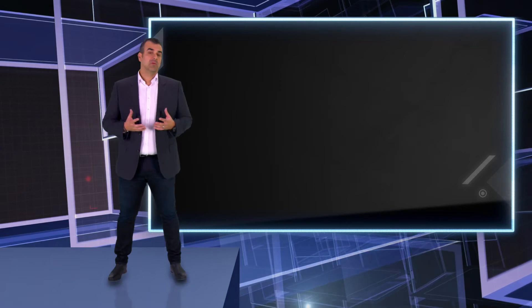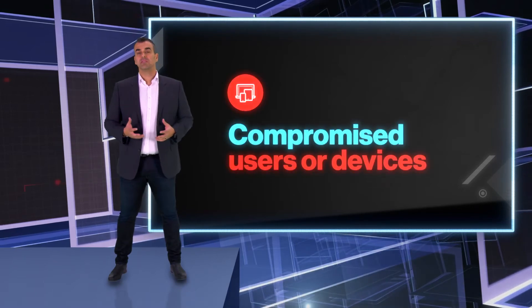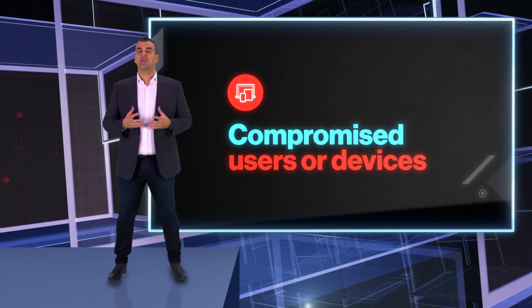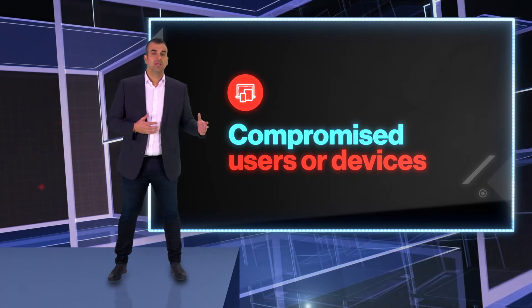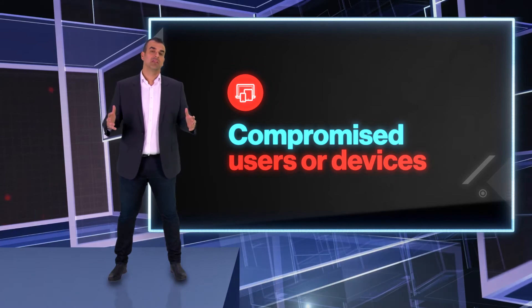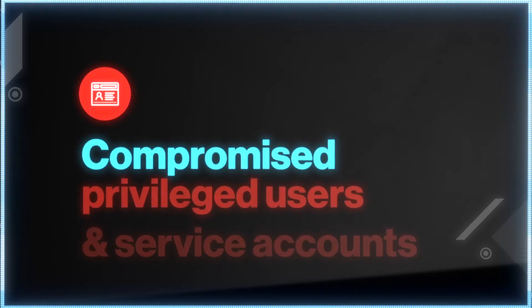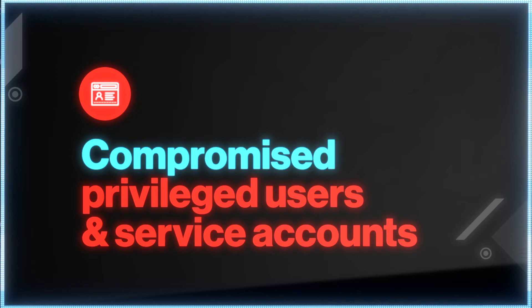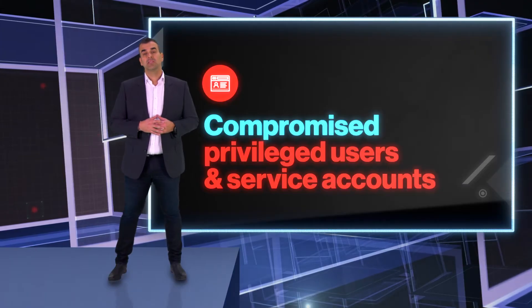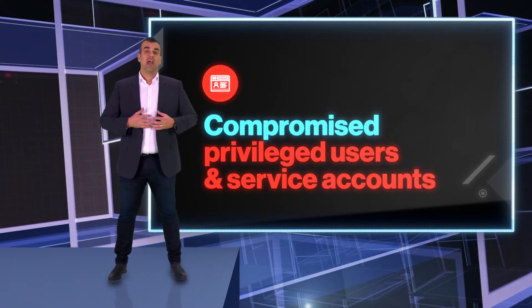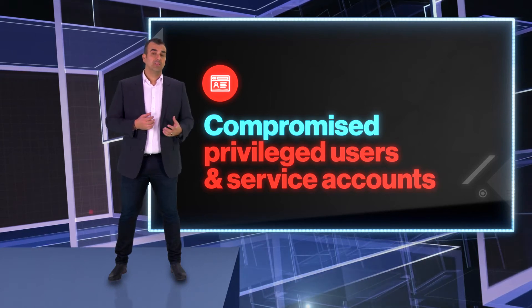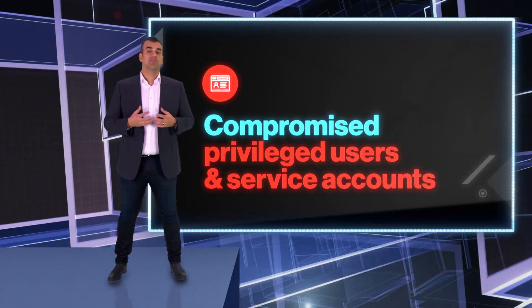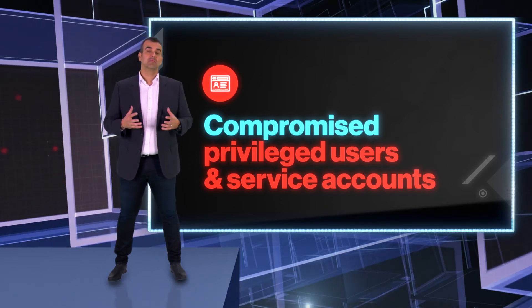What are some examples of problems organisations are facing today that we aim to solve? Firstly, dealing with compromised users or devices — attackers will attempt to escalate privileges, move laterally, and then compromise all network devices in the organisation. Compromised privileged users and service accounts also bring more risk. By nature, administrators can cause greater harm, and service accounts are often hard to manage, forgotten, and provide attackers with easy access to key systems and data.